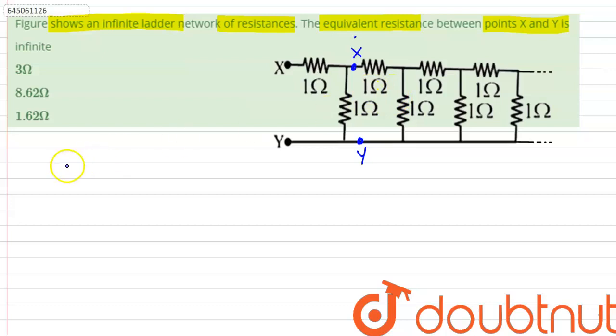Therefore, we can redraw this diagram as this. We have assumed that the equivalent resistance of this ladder is R. Thus we can say that R is equals to 1 plus R divided by 1 plus R.